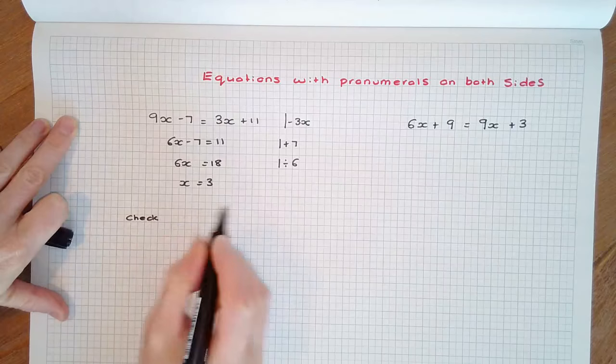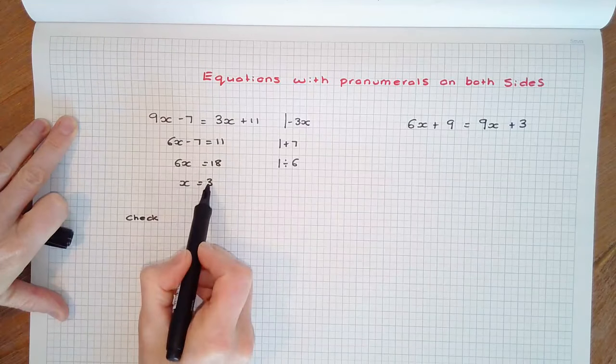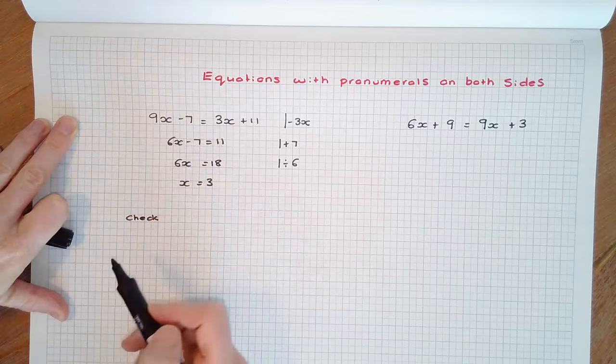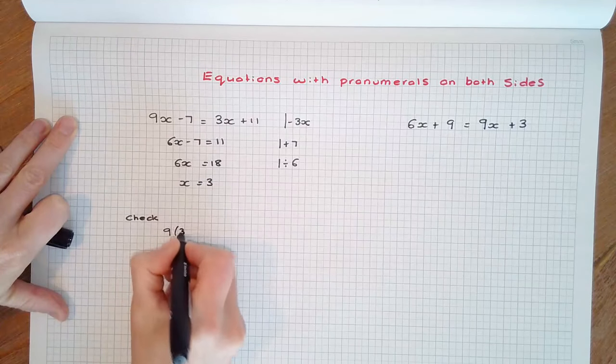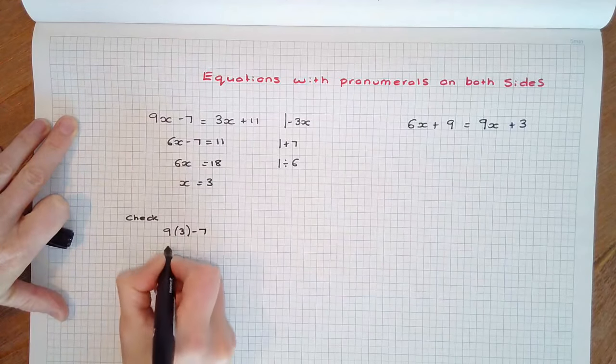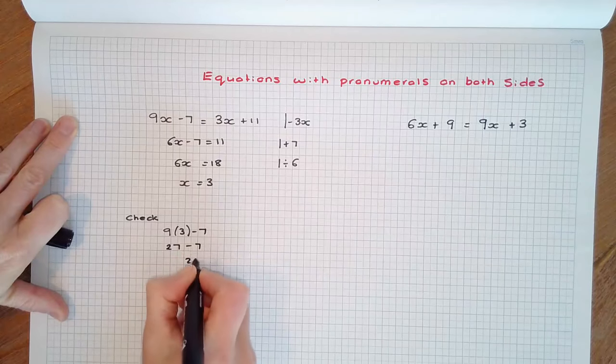Checking is a little different. We need to substitute x equals 3 into both the left-hand side and the right-hand side. 9 times 3 minus 7, which is 27 minus 7, which is 20.